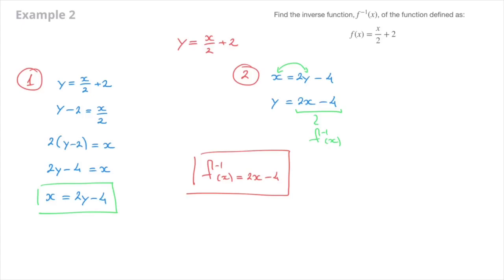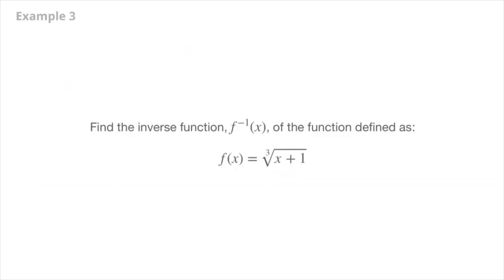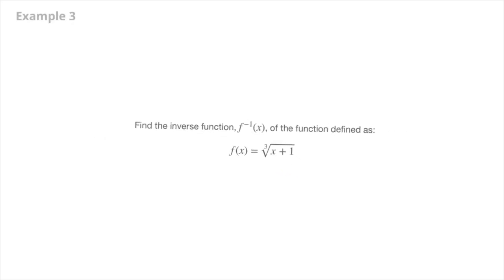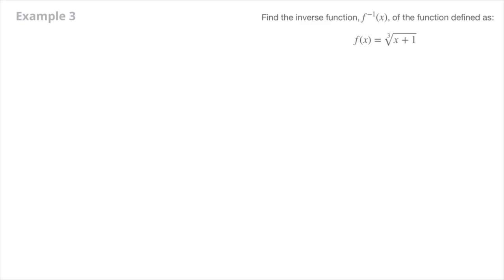Let's look at one last example. We need to find the inverse function of the function defined as f of x equals the cubic root of x plus 1. I start by rewriting this function in terms of x and y, so that's y equals the cubic root of x plus 1. Now we move on to the two-step method for finding the inverse.